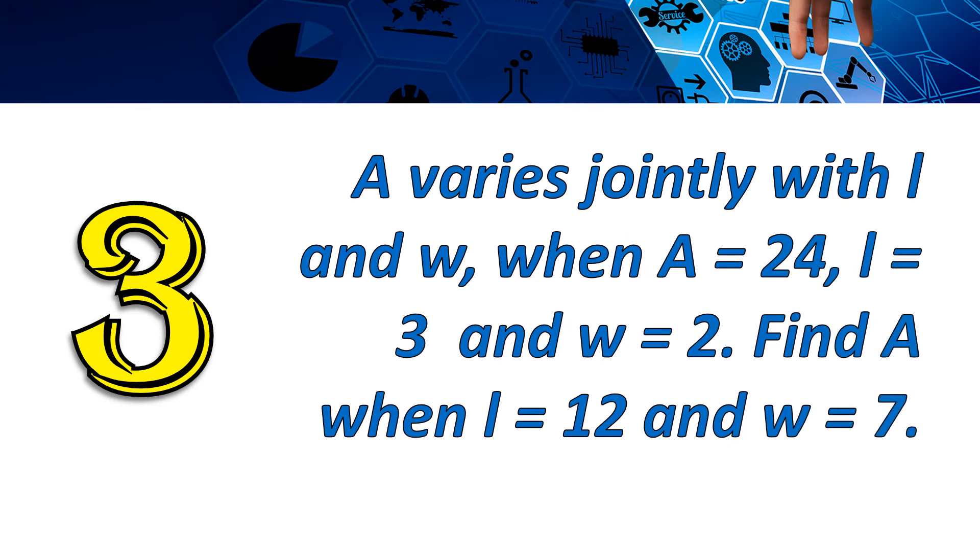Example number 3. A varies jointly with L and W. When A equals 24, L equals 3, and W equals 2, find A when L equals 12 and W equals 7.